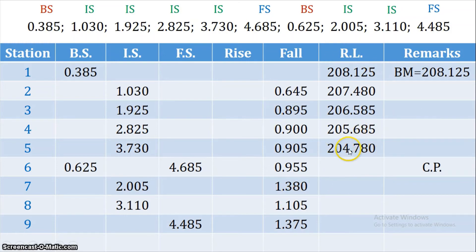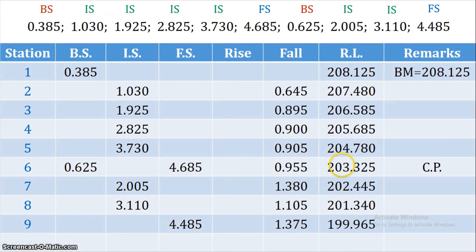In each case, the reduced level calculation is: previous reduced level minus fall value. We continue filling all the values in the reduced level column until all stations are covered.